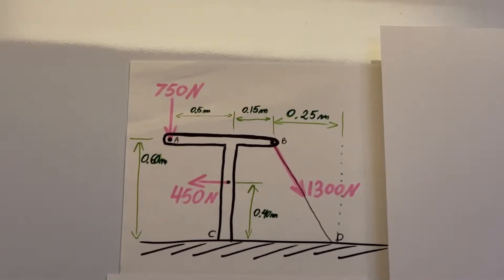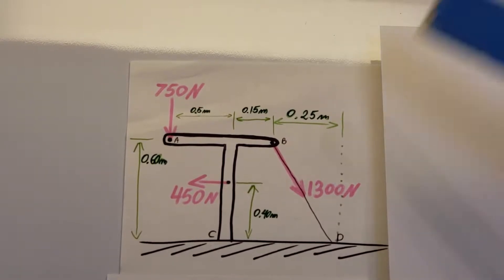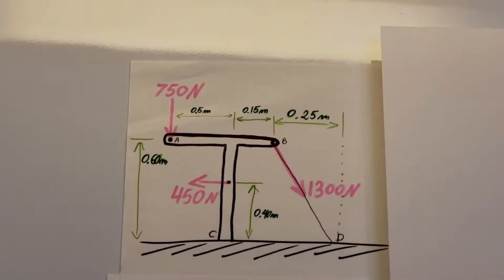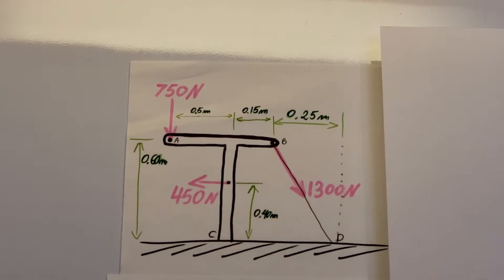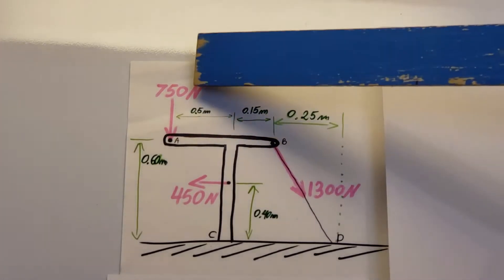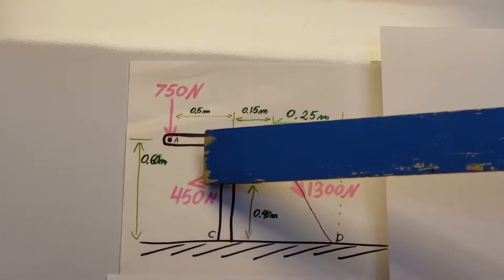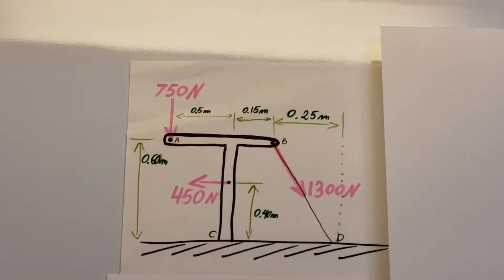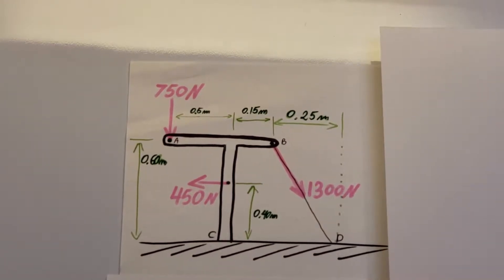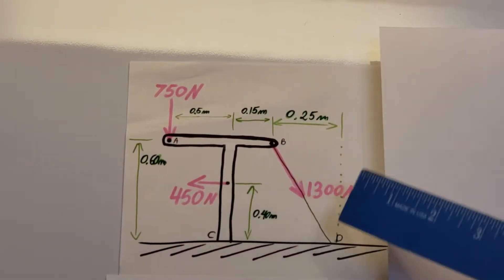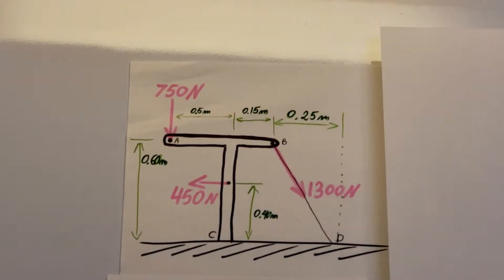Let's work on a static problem. Knowing that the tension in the wire BD is 1300 newtons, determine the reaction at the fixed support at point C of the frame shown. We also know that we have a 750 newton force and a 450 newton force, along with some distance measurements on the picture which will be handy as we go along.